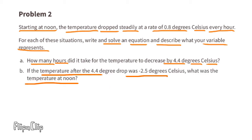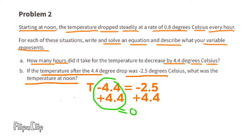Part B: if the temperature after the 4.4 degree drop was negative 2.5 degrees Celsius, what was the temperature at noon? We write: T minus 4.4 equals negative 2.5. To get T by itself, add 4.4 to both sides. That gives T on the left and 1.9 on the right. At noon, the temperature must have been 1.9 degrees Celsius.